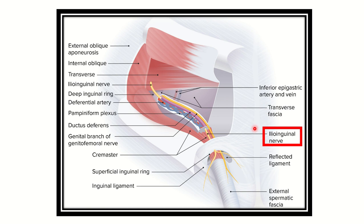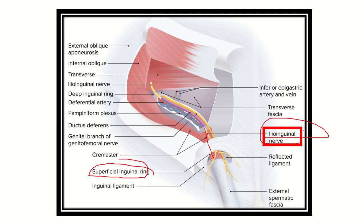In this picture we can also see the ilioinguinal nerve. This nerve passes throughout the entire length of the inguinal canal and passes through the superficial inguinal ring. So at the level of the superficial inguinal ring, the ilioinguinal nerve is the most important nerve.